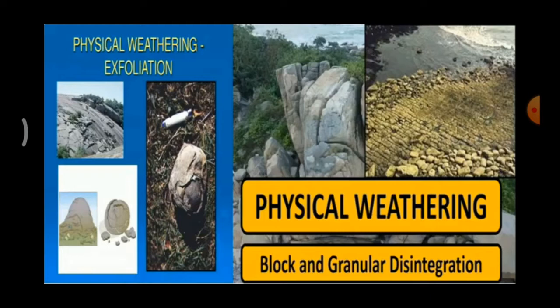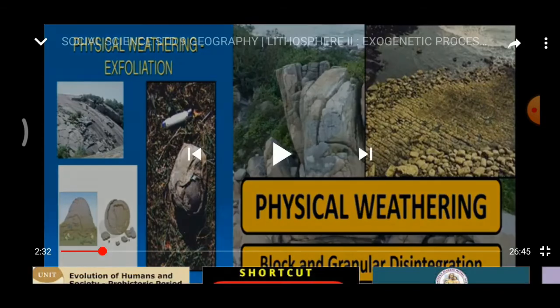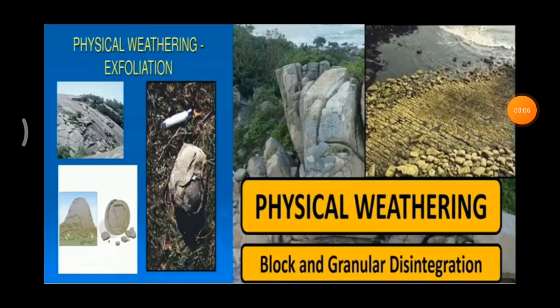Granular disintegration takes place in crystalline rocks. In this type, the grains of the rocks become loose and fall out. This process of grains becoming loose and falling down is called granular disintegration.